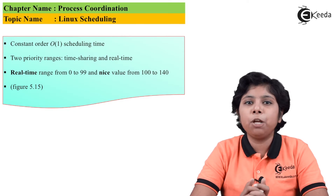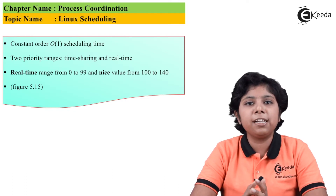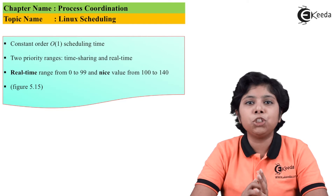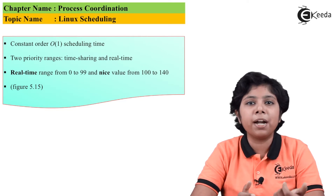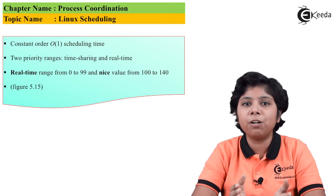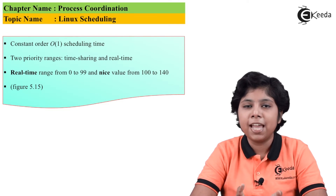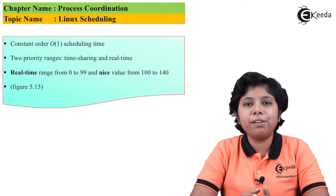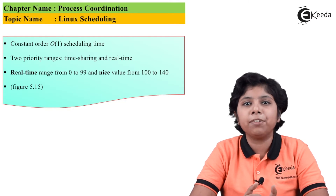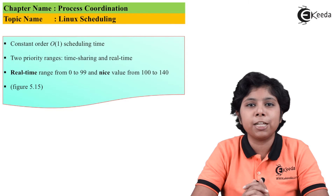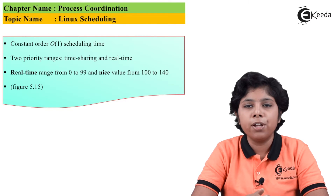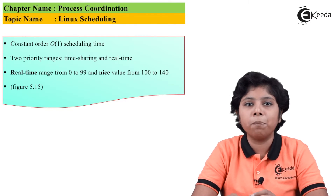Rather than only assigning priority to a task, the Linux kernel records how long each process has run on the CPU by maintaining a virtual run time stored in a variable known as vruntime. This vruntime maintains a record of the virtual CPU run time of a process. The virtual run time is based on a decay factor tied to the priority of a process — the lowest priority process has the highest decay factor and the highest priority process has the lowest decay factor.